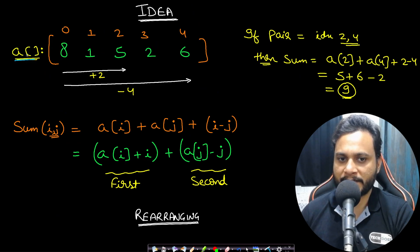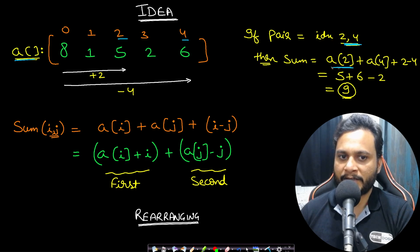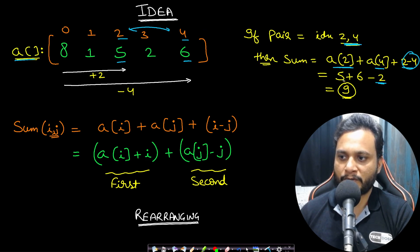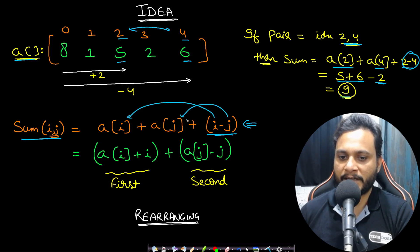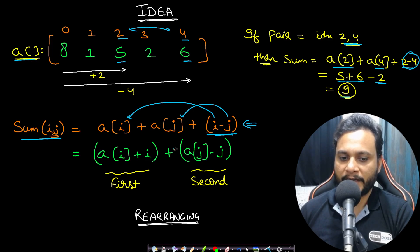Looking at the formula carefully: for a pair (i, j), the score is a[i] + a[j] + i - j. We can rearrange this by grouping i with a[i] and j with a[j], rewriting it as (a[i] + i) + (a[j] - j). For example, pair (2, 4) gives (5+2) + (6-4) = 7 + 2 = 9, which matches the direct calculation.